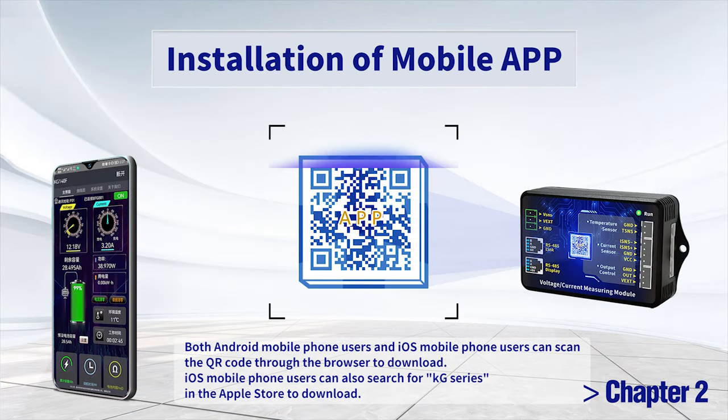Chapter 2: Installation of mobile app. Both Android mobile phone users and iOS mobile phone users can scan the QR code through the browser to download. iOS mobile phone users can also search for Kilogram series in the Apple Store to download.